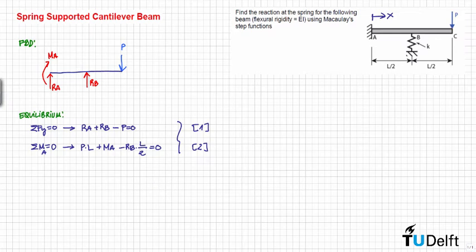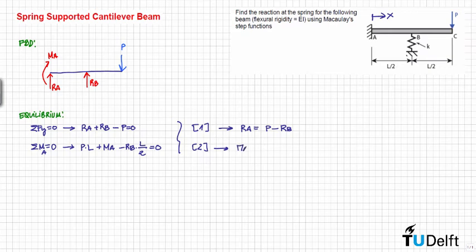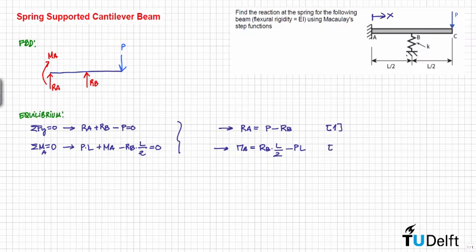Since we already have two equations, we can calculate Ma and Ra as a function of the reaction force Rb, because this will simplify our problem later. From the first equation, the reaction force Ra is equal to P minus Rb, and from the second equation, Ma is equal to Rb times L/2 minus PL. These are equations one and two.